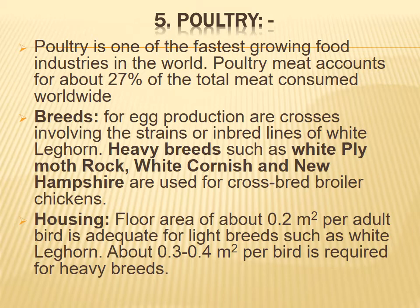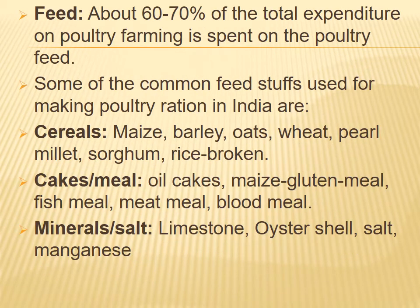Poultry housing: floor area of about 0.2 square meters per adult bird is adequate for light breeds such as White Leghorn. About 0.3 to 0.4 square meters per bird is required for heavy breeds. Feed accounts for about 60 to 70 percent of total expenditure on poultry farming.